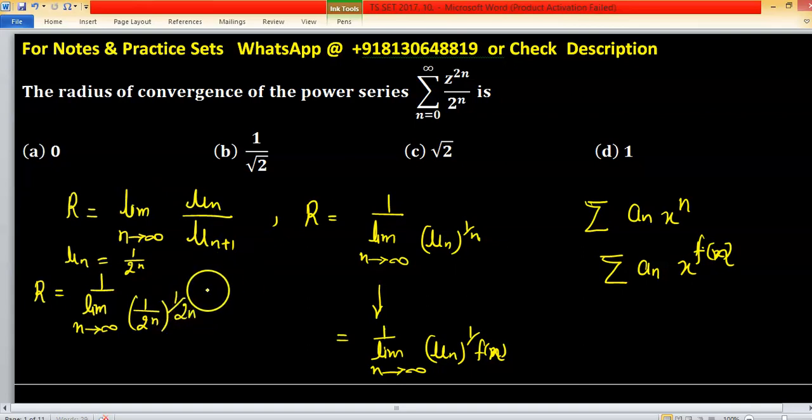We have 1 upon 2 raised to the power n raised to the power upon 2 upon n, n cancel out by n.